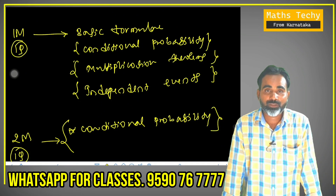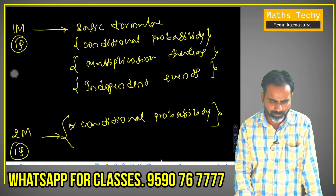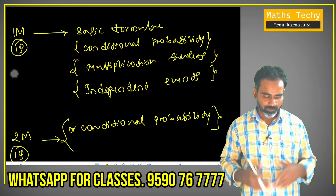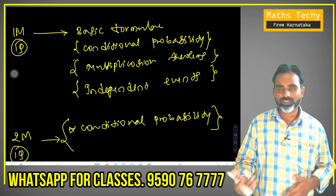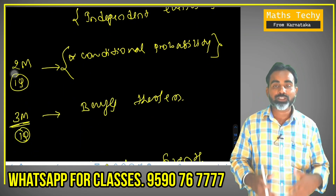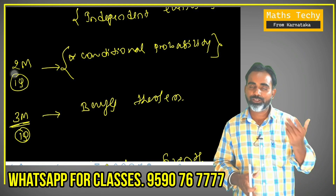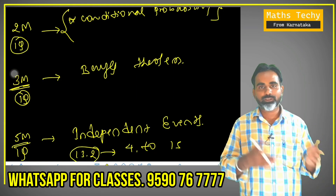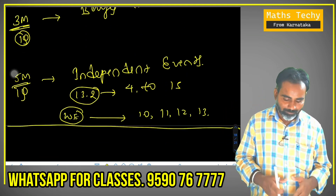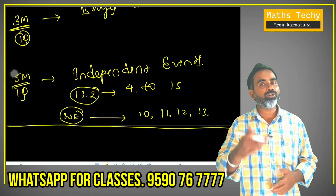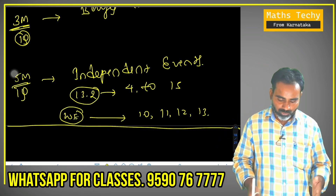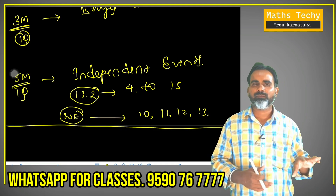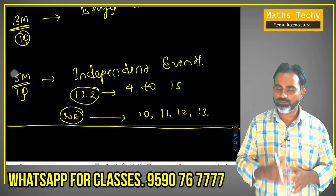In probability, use the 1 mark basic formula. Maximum conditional probability is very important. If it is independent events, it is the multiplication theorem. In 2 marks: conditional probability. The 5 marks are basically Bayes' theorem — it is expected on a common basis. In 5 marks: independent events and also normal trials. If it is practice, it is a bonus. If it is a simple problem, it is very simple — it is a calculation.